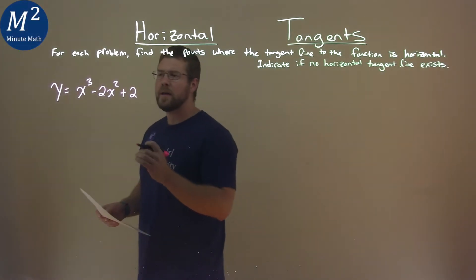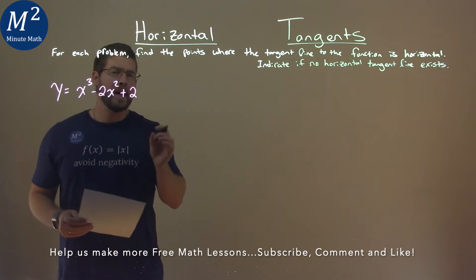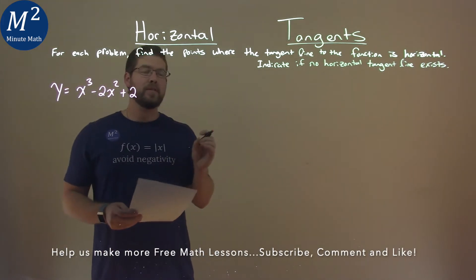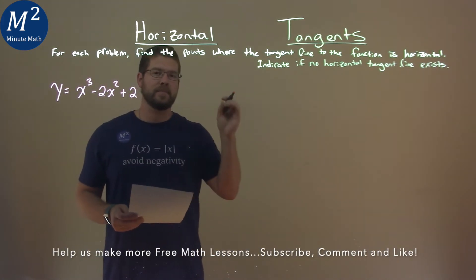We're given this problem right here, y equals x to the third power minus 2x squared plus 2, and we want to find the points where the tangent line to the function is horizontal.